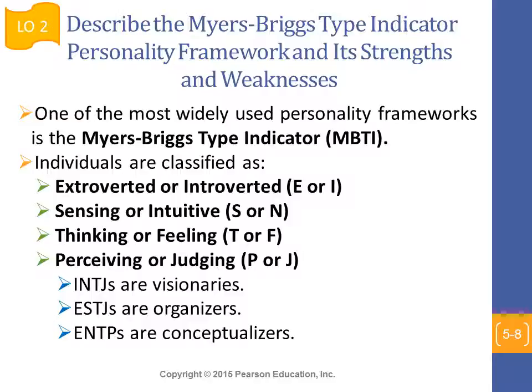All these classifications are combined into 16 different personality types. For example, someone who is INTJ is classified as a visionary. According to this framework, these people usually have original minds and great drive; they are characterized as skeptical, critical, independent, determined, and often stubborn. This MBTI method is widely used — organizations like Apple, AT&T, Citigroup, and GE internationally use it to look into the personality characteristics of their workforce.